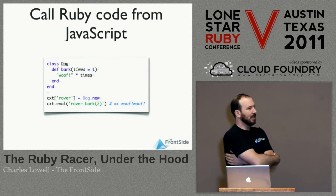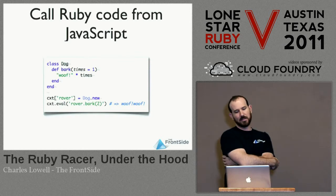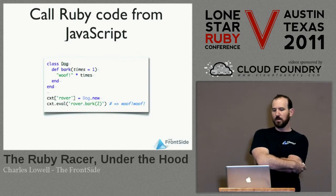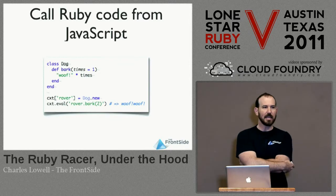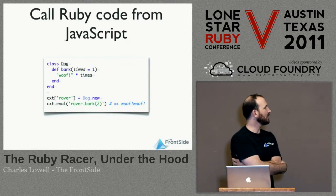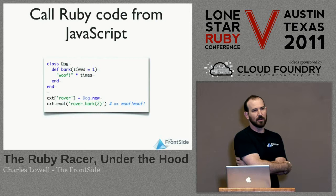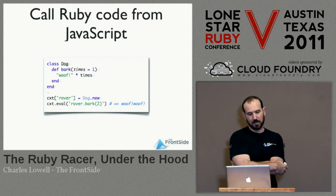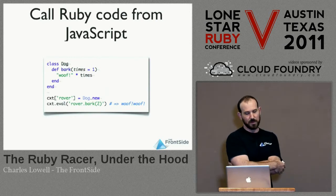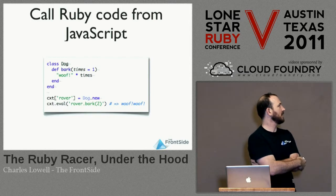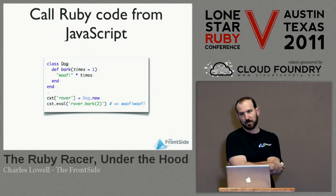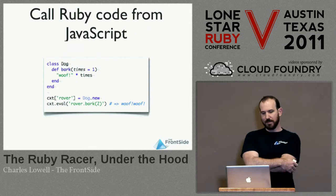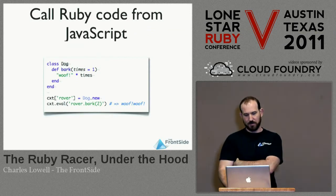Here we've got a simple class — class Dog — with one method, bark. We're going to take an instance of that Ruby object and put it inside our V8 context. You can see that I can just say rover.bark, just like it was a normal JavaScript object, and it will actually invoke the Ruby method.